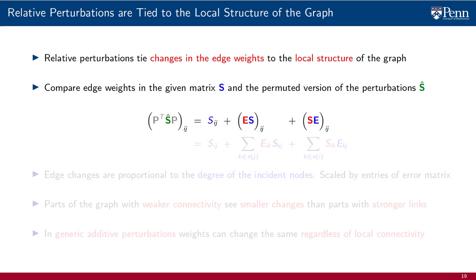To compare the ij entry of the perturbed matrix S hat with the ij entry of the matrix S, the definition of relative perturbations says that we have to compute the ij entries of the products E times S and S times E.